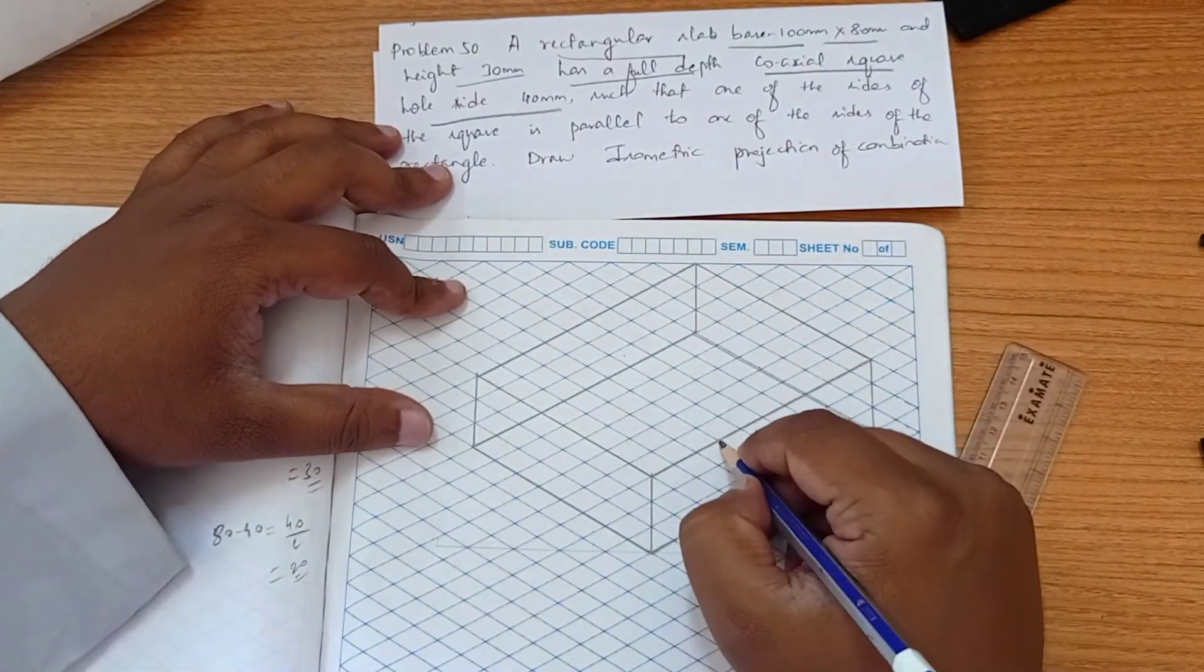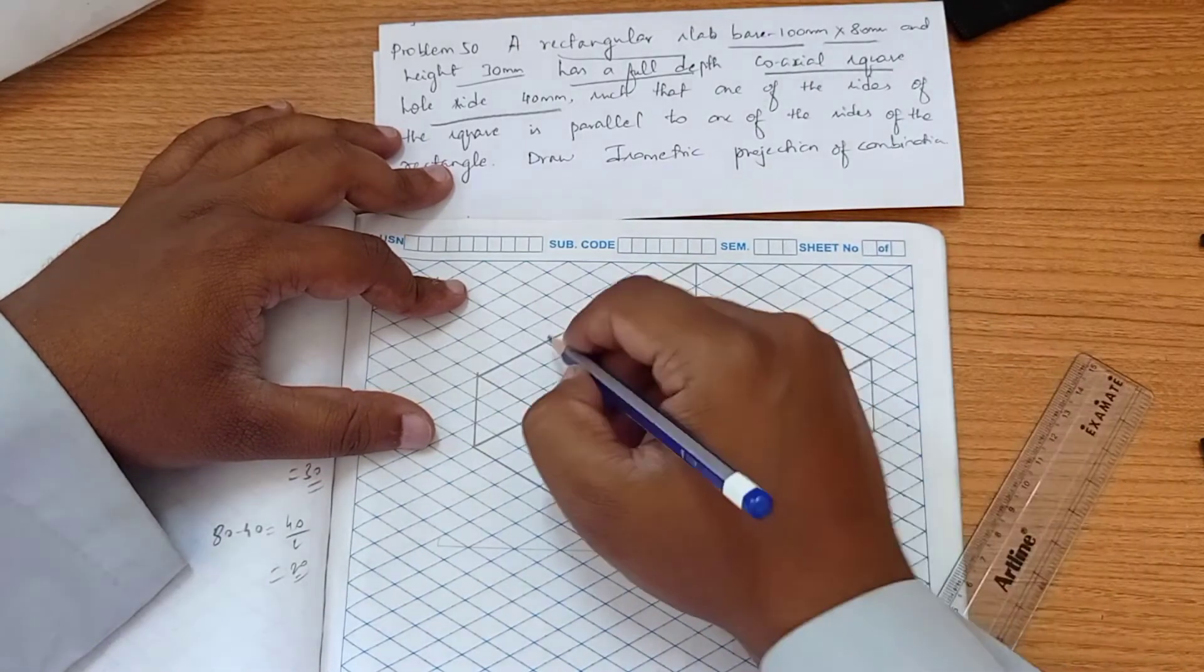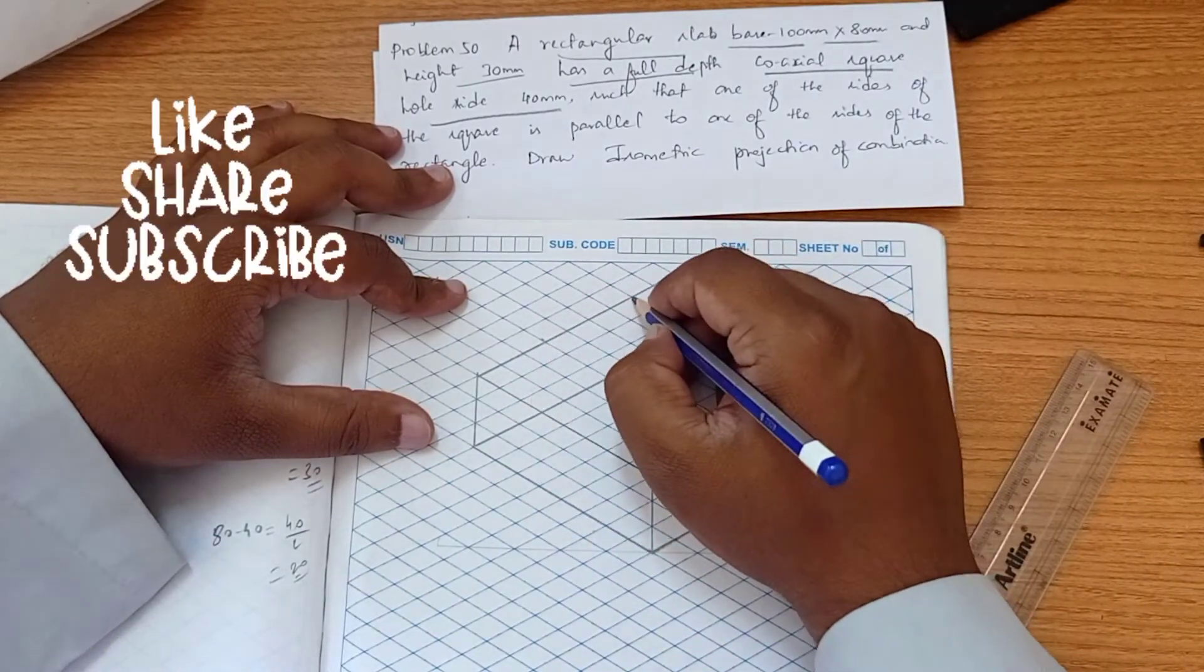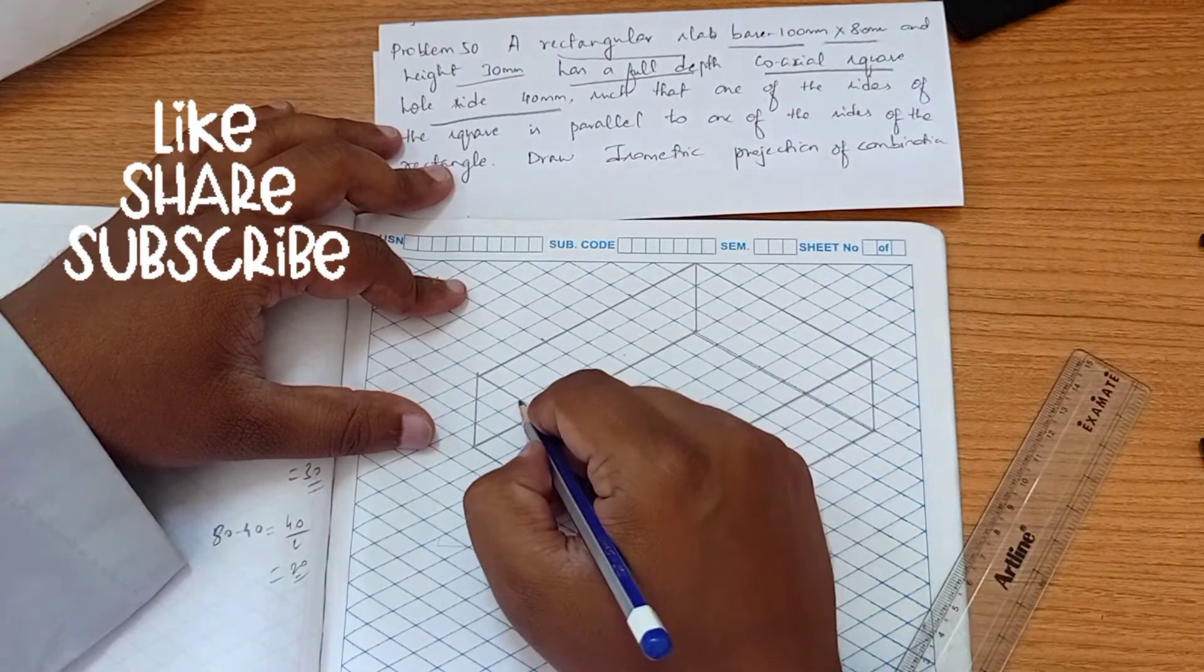So on the 100mm side we have to mark 40.